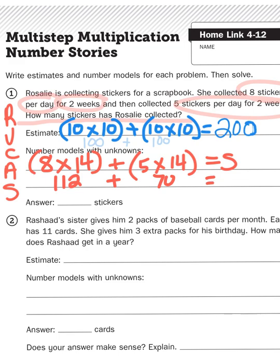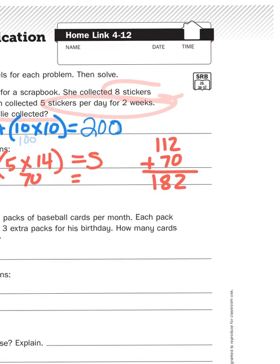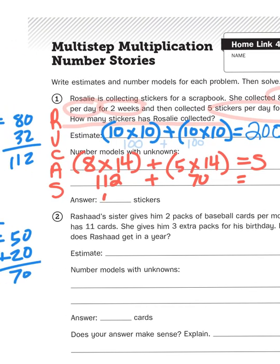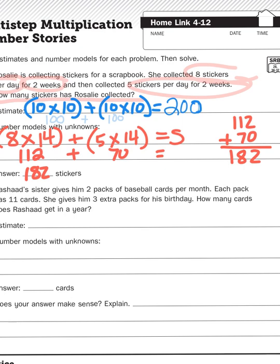What is one hundred and twelve plus seventy? Let's line those place values up so we don't have any calculation errors. It's going to give me a total of one hundred and eighty-two stickers. One hundred and eighty-two stickers is my answer. Now, is that answer reasonable? Well, yes, because my estimate was two hundred. And a hundred and eighty-two is pretty close to two hundred. In fact, if you round a hundred and eighty-two to the nearest hundred, it would be two hundred. Even if you rounded it to the nearest ten, a hundred and eighty, that's still pretty close to two hundred.